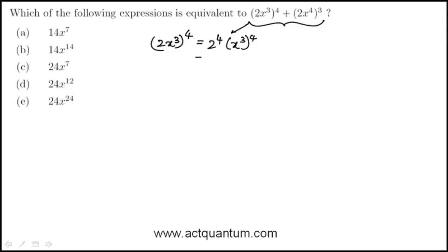In here, 2 to the 4, that's just 16. And to understand this, this really means I'm going to multiply x cubed 4 times, and that is equivalent to having a set of 12 x's. So this is really the same as x to the 12, or in other words, we're just adding the exponents.